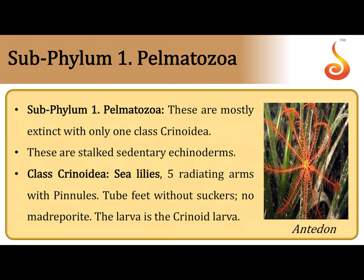Phylum Echinodermata is classified into two major subphyla. One is called Pelmatozoa, which cannot move around — they are stalked. Some forms like feather stars can move around, but most members under subphylum Pelmatozoa are sedentary, meaning they don't move and are fixed to a stalk at the bottom of the sea. Therefore, they are referred to as the stalked and sedentary echinoderms.